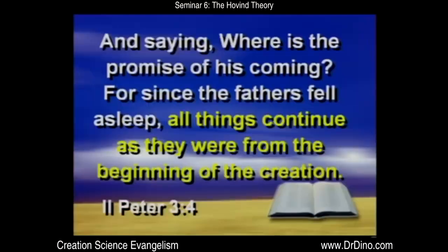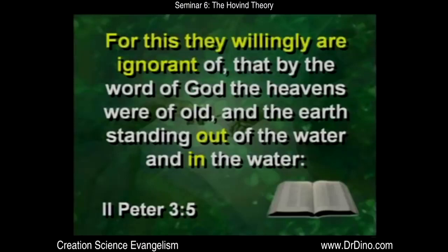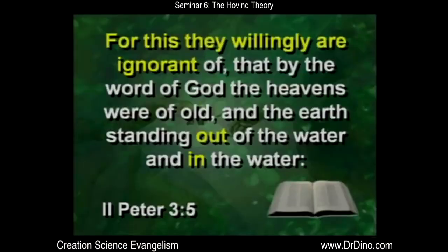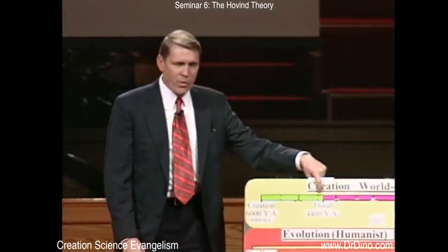The scoffers are going to say, 'Where is the promise of His coming? For since the fathers fell asleep, all things continue as they were from the beginning of the creation.' This is called the uniformitarian doctrine — the way things are happening now is the way they've always been happening: long, slow, gradual processes. The Bible says the scoffers are willingly ignorant — in the Greek, that means dumb on purpose. They are willingly ignorant of how God made the heavens and how the earth was standing in the water and out of the water. The world was overflowed with water and perished.